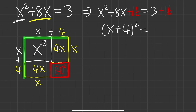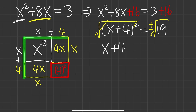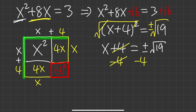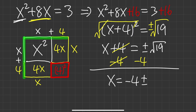So x plus 4 squared equals 3 plus 16, which is 19. Take the square root of both sides — remember to include plus or minus. Square root of 19 can't be simplified, so x plus 4 equals plus or minus square root of 19. Subtract 4 from both sides: x equals negative 4 plus or minus square root of 19.